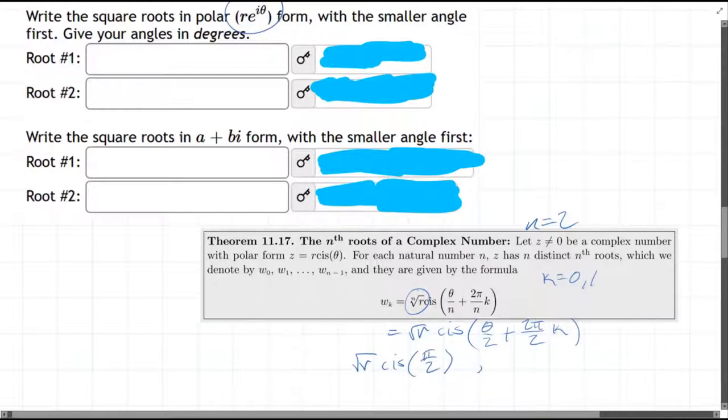And the other one is square root of r, cosine i sine of pi over two. The next one will be pi over two plus pi, or plus two pi over two. So that'll be three pi over two.